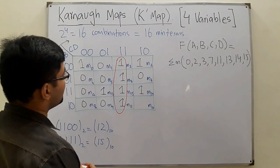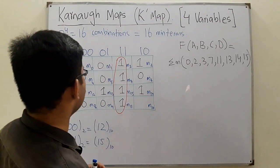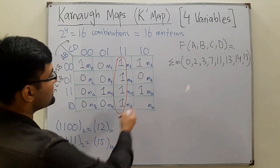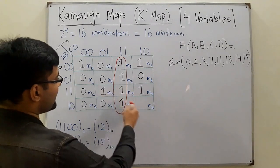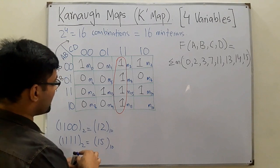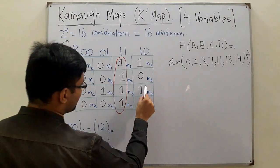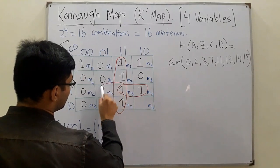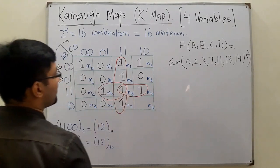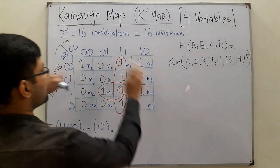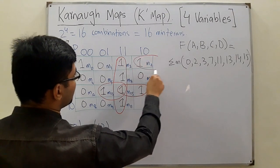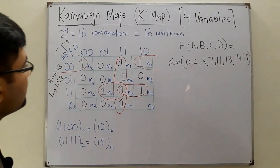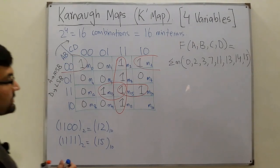For the second group, we cannot group three ones — groupings must be powers of two. We can group these two ones together, and we can group another pair of two ones. One more group can be formed using map wrapping (rolling), giving us another pair.